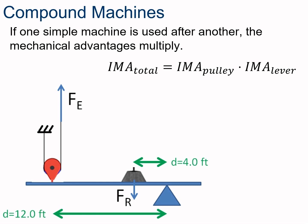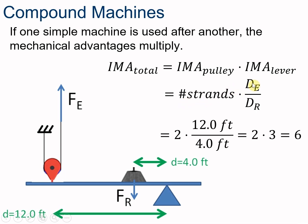How about compound machines? What happens if we have more than one machine? In this picture we have a lever with a resistance force and resistance distance of 4 feet, and about 12 feet away an effort force — but the effort force has a movable pulley attached. The ideal mechanical advantage of a compound machine is the IMA of the pulley times the IMA of the lever. We have two strands, times 12 feet divided by 4 feet — that's 2 times 3, or 6. A 6 to 1 mechanical advantage.